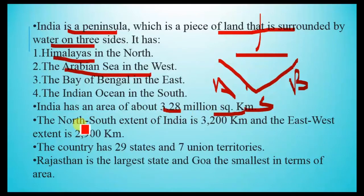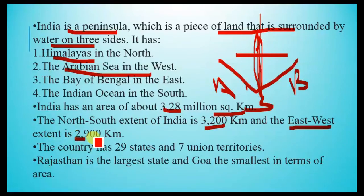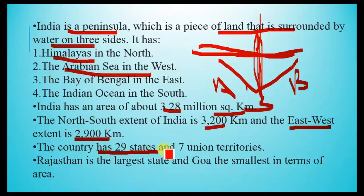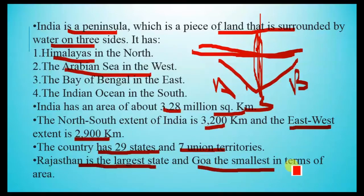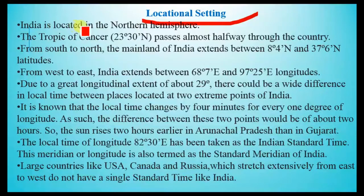The north to south extent of India is 3,200 kilometers — this is the vertical distance of expansion. The east to west extent is 2,900 kilometers — this is the horizontal expansion. India has 29 states and 7 union territories. Rajasthan is the largest state and Goa is the smallest state in terms of area.